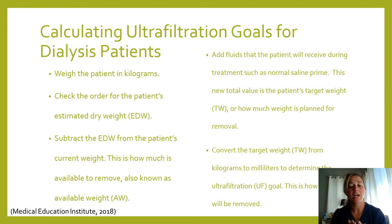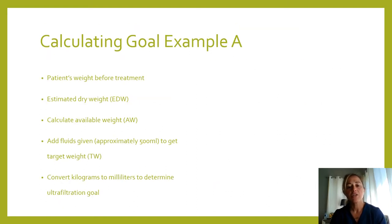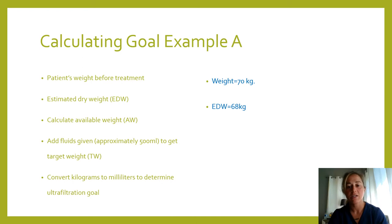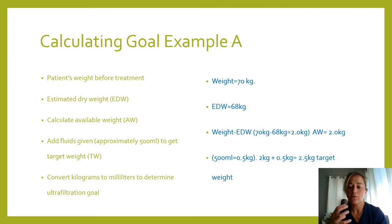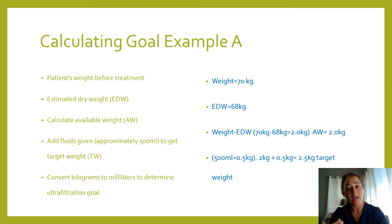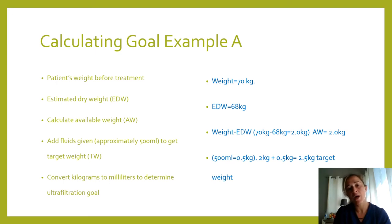Example A: the patient weighs 70 kilograms. The doctor says they should weigh 68 kilograms. The difference is two kilograms — that is your available weight. Next, account for the prime fluid given during treatment, which is most often 500 milliliters, or 0.5 kilograms. Add that to the two kilos and you get a total of 2.5 kilograms — that's how much weight we need to take off. Convert from kilograms to milliliters: that gives you 2,500 milliliters, which is what you set on the machine.